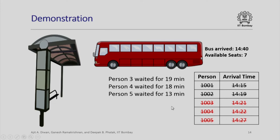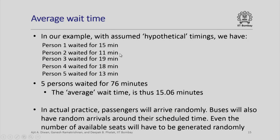In a nutshell, we have simulated a queue using arbitrary arrival times for both the bus and the passengers and an arbitrary number of seats available in the bus. We are able to calculate the waiting time for each person and consequently the average waiting time. In our example, person one waited 15 minutes, person two 11 minutes, and so on — totally five persons waited for a sum of 76 minutes, giving an average wait time of 15.06 minutes. In practice, these timings permit the bus company to schedule more buses during peak hours or for people to estimate when they should appear at the bus stop to be more likely to get a bus.